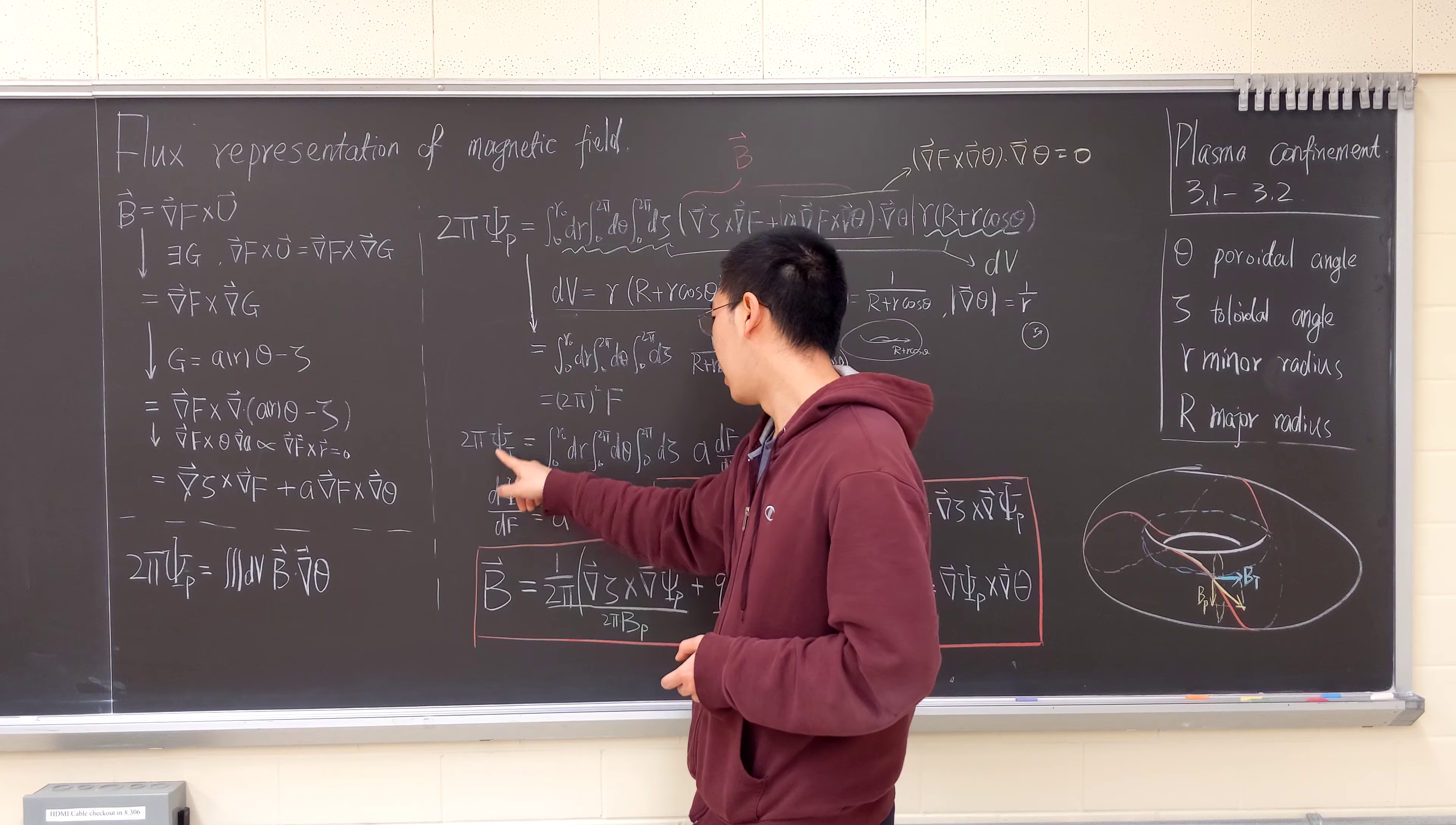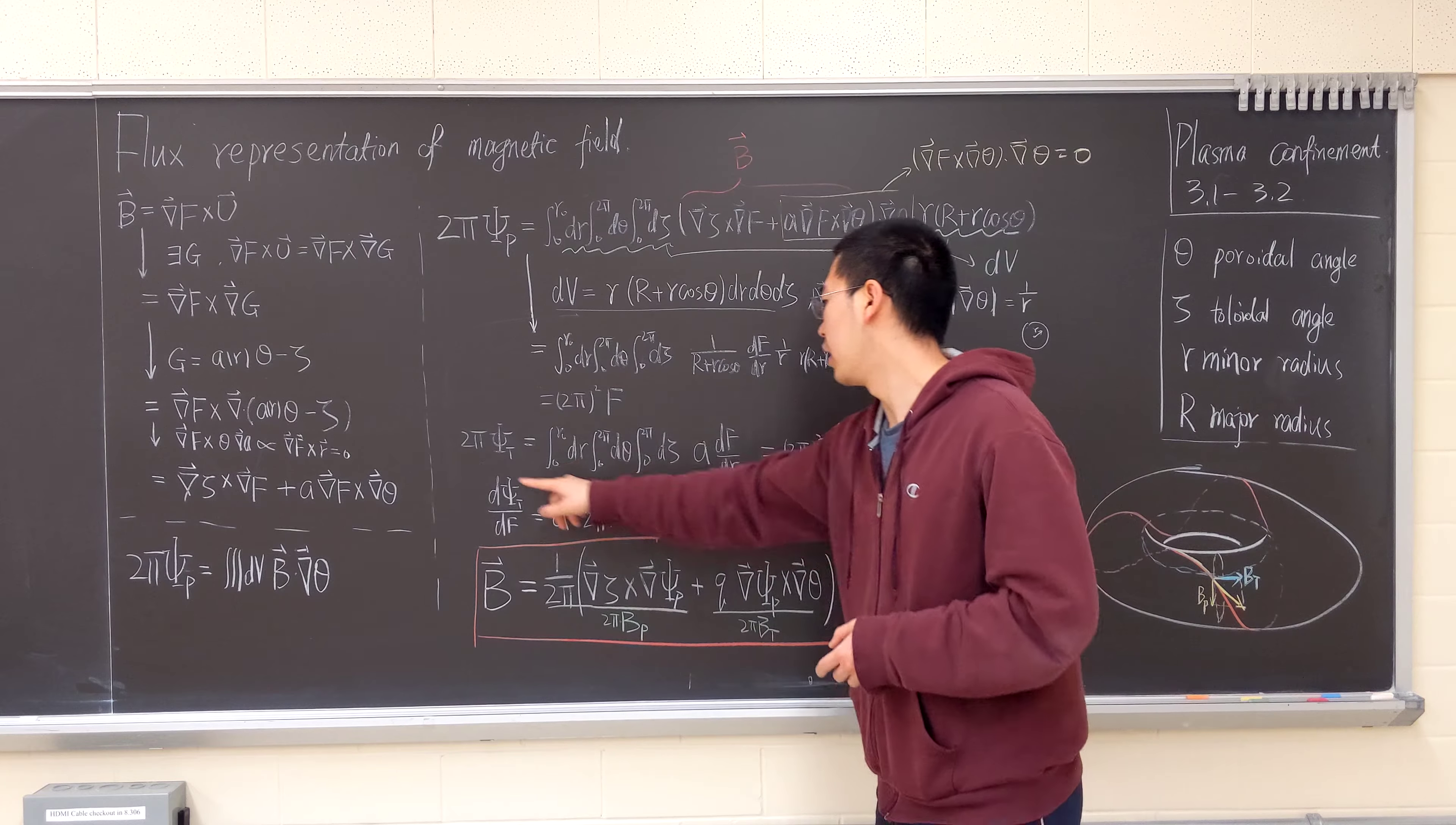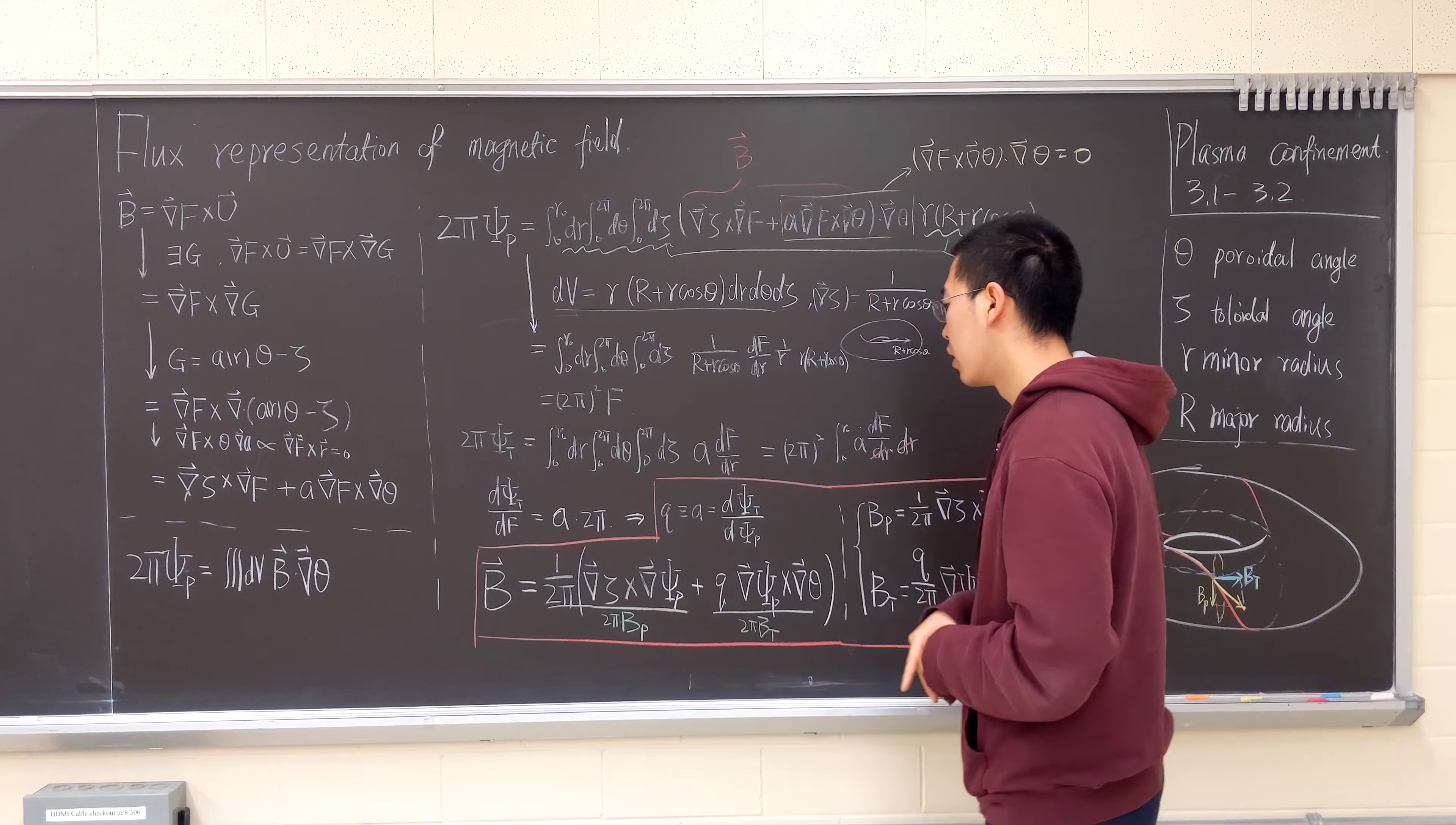We have phi_t, d phi_t, d psi_t over dF. dF equals A times 2 pi. One of the 2 pi cancels itself. We know that F can be expressed in terms of the poloidal flux.